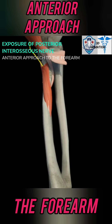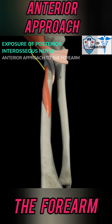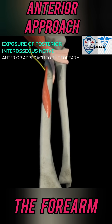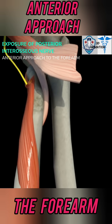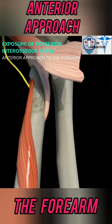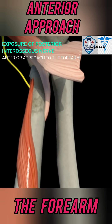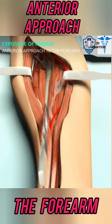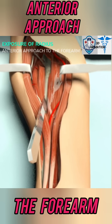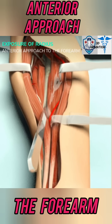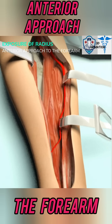Identify the posterior interosseous nerve entering the arcade of Frohse. Supination moves the posterior interosseous nerve out of the surgical field. Incise the supinator in line with the radius from proximal to distal. Caution: risk of injury to the posterior interosseous nerve if not supinated.